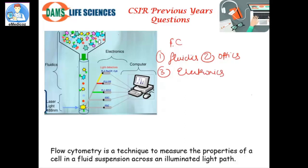In flow cytometry, you have a heterogeneous cell population which is labeled. The fluidic pressure is such that a stream is formed, allowing only one cell to pass through the laser light at a time. This laser light is then used to excite the fluorescent molecule tagged on the cell surface.